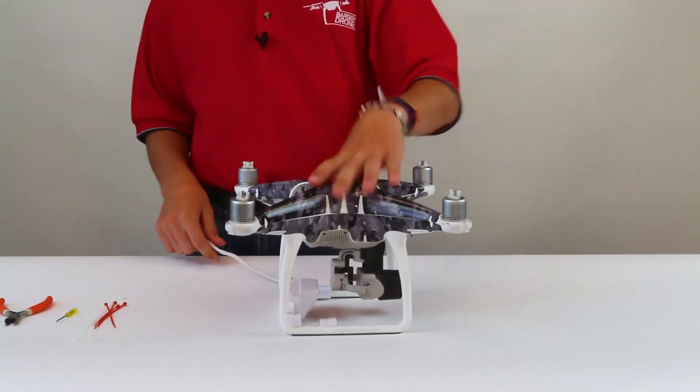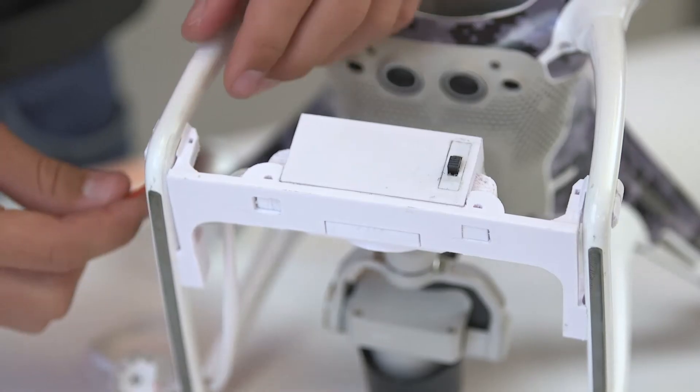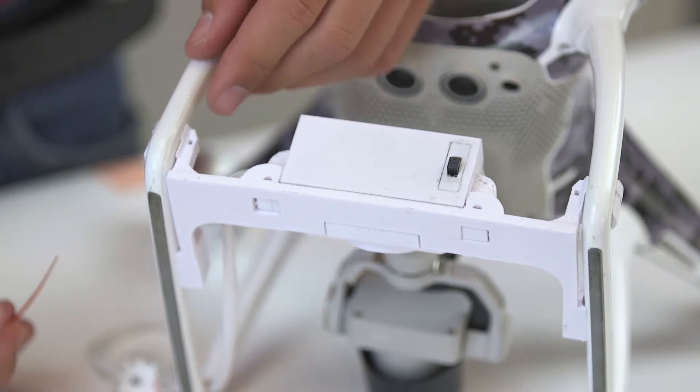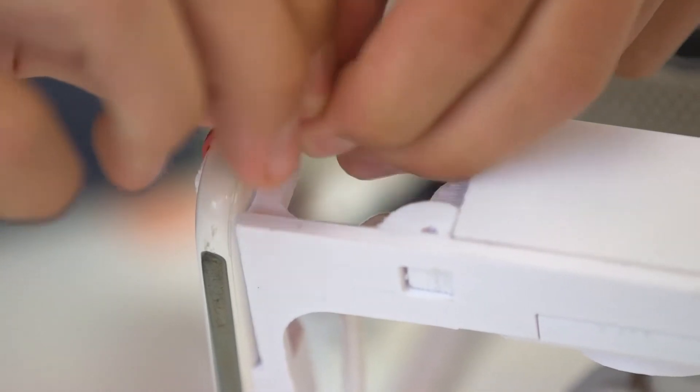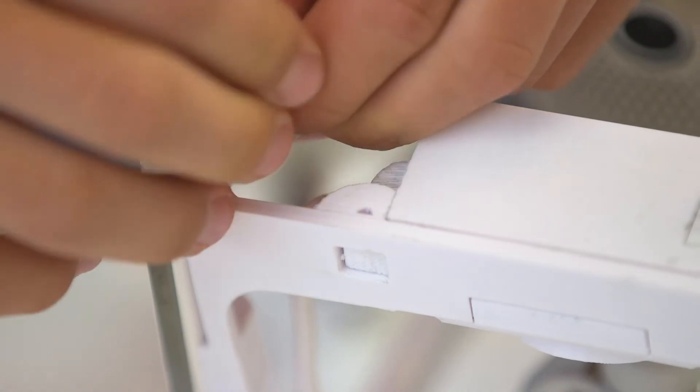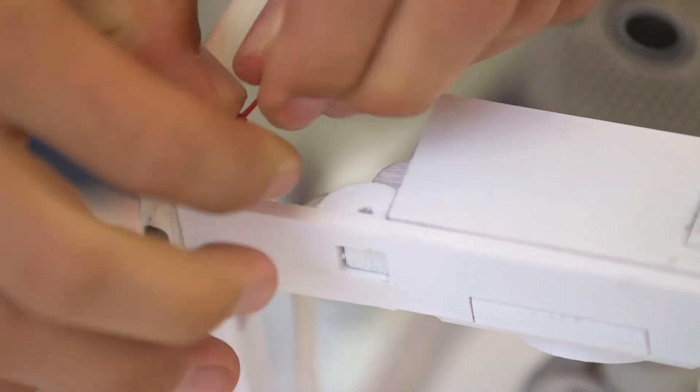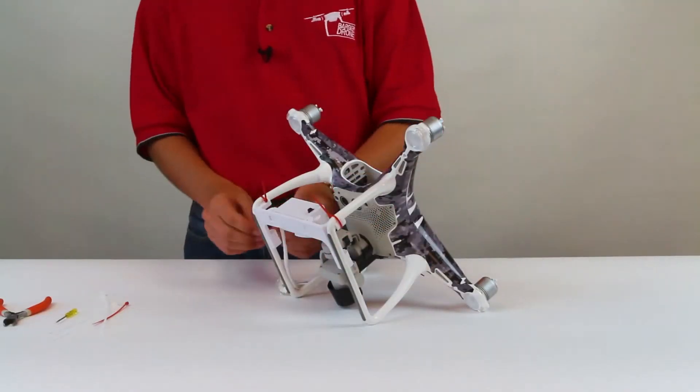Next you secure the siren with zip ties. We put four zip ties on the legs to secure the horn to the drone. When you put the zip ties on the legs be sure to go through the two tiny slots on either side of the drone legs.